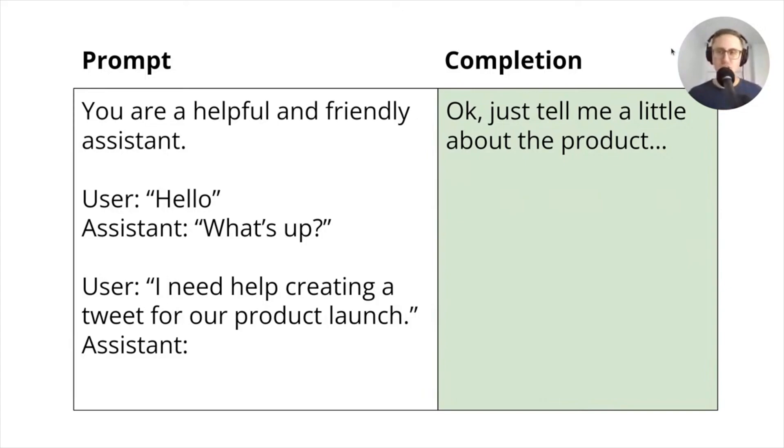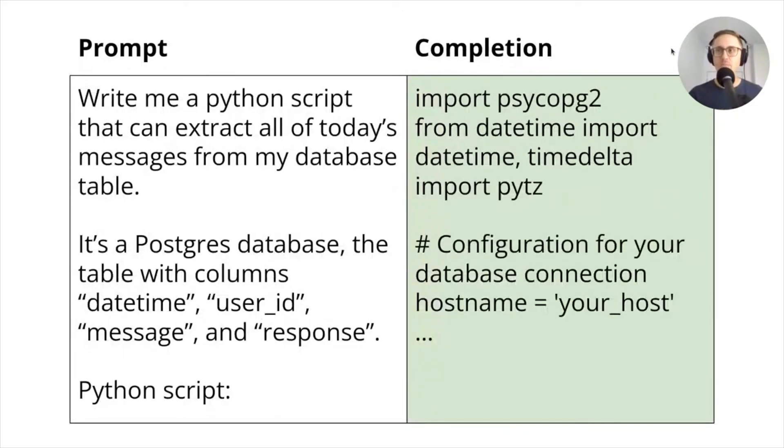But I can also do really interesting things. I hope all of you are using Codium or GitHub Copilot or something like this if you're able to. In my code editor VS Code, under the hood, Codium or Copilot is giving a prompt, you know, something like 'Hey, generate me a script that does this thing,' and then it can output a completion of code.